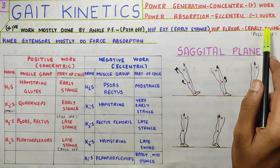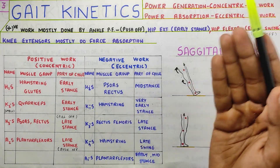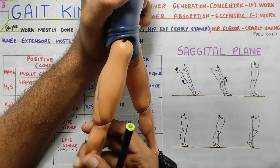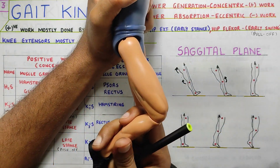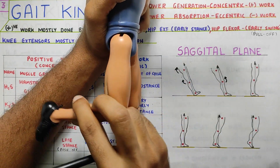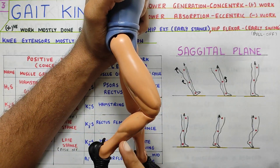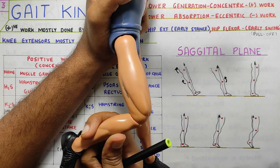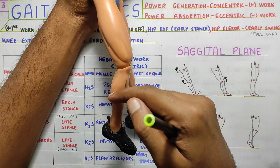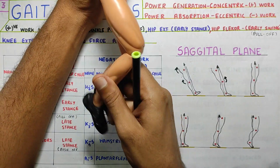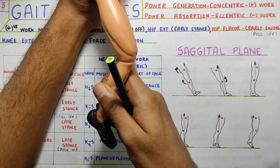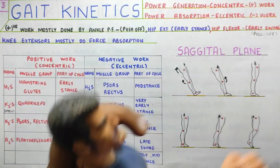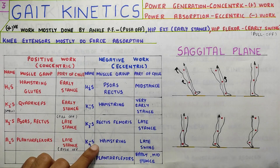Finally, the hamstrings work eccentrically during the swing phase as K4S. When you are swinging the leg, gravity will be pulling your tibia down, but this downward movement of the tibia has to be controlled. It cannot just collapse down — it is controlled by your hamstring muscles. That would be K4S.